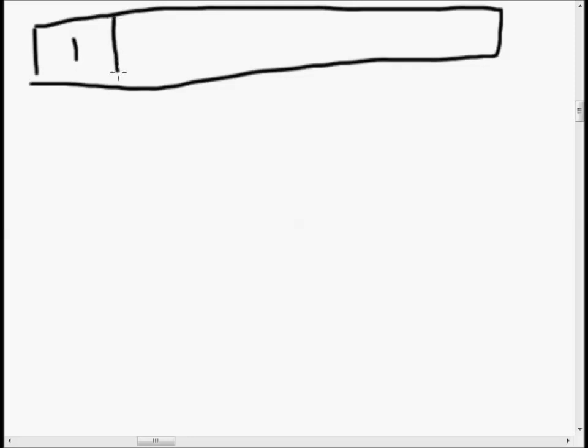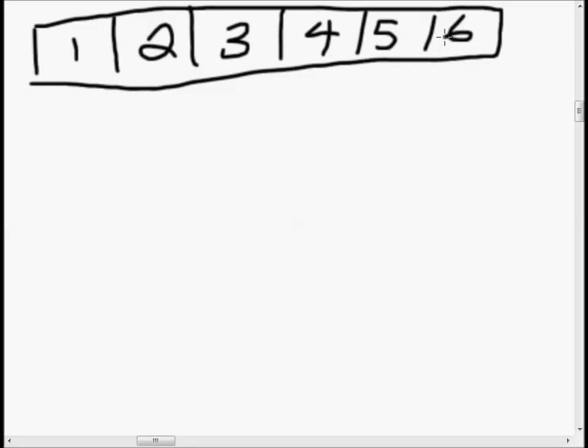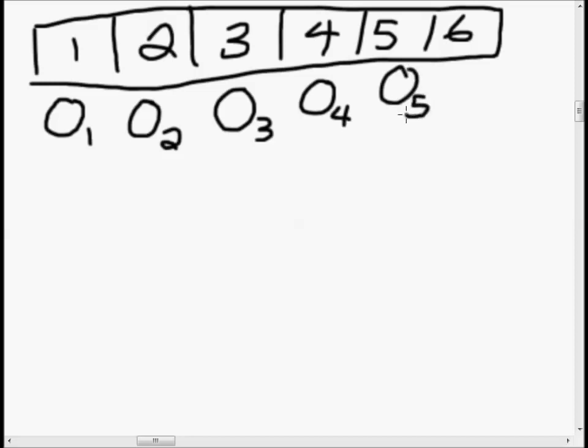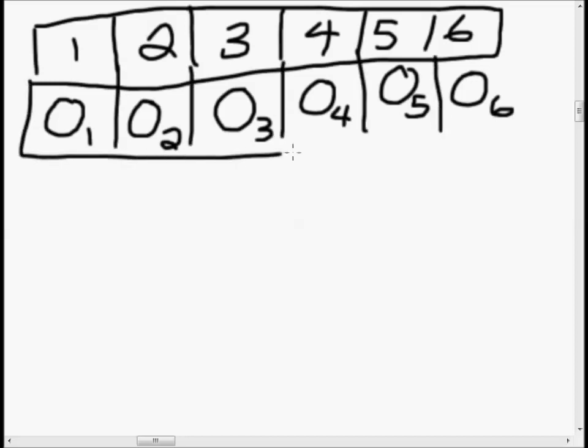I'm going to start from the bottom and figure out what the question is asking: what probabilities should be assigned to the outcomes? I'm going to make a box to keep track of our variables. Since this is a die, there are six outcomes: the probability of outcome 1, outcome 2, outcome 3, outcome 4, outcome 5, and outcome 6. These are the six different things we're trying to figure out.